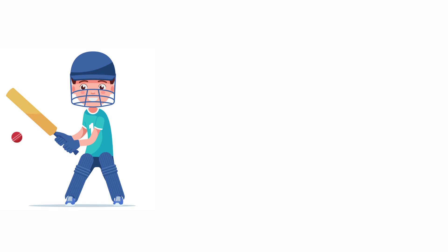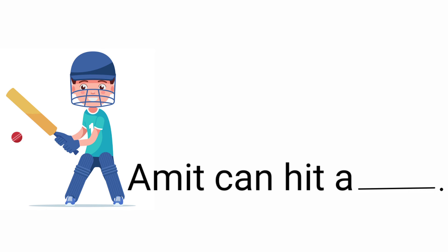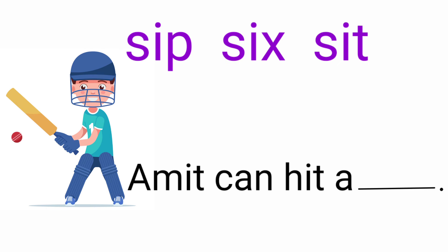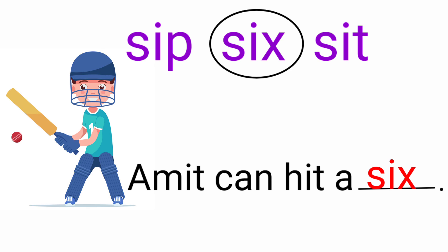Look at the next picture. The given sentence is: Amit can hit your dash. The given words are sip, six, sit. Here the suitable word is six, so we need to circle the word six and then write it to the sentence: Amit can hit his six.